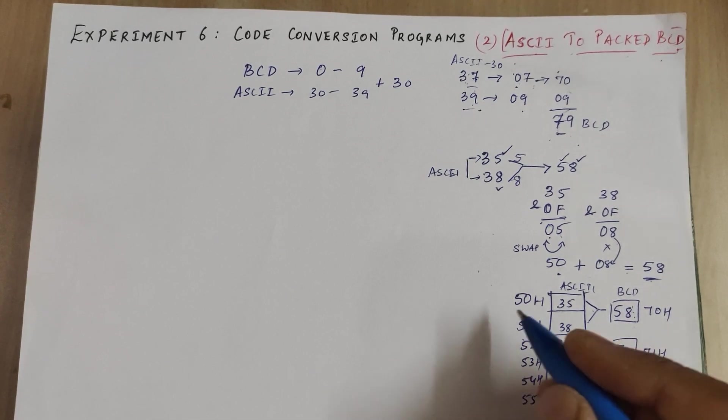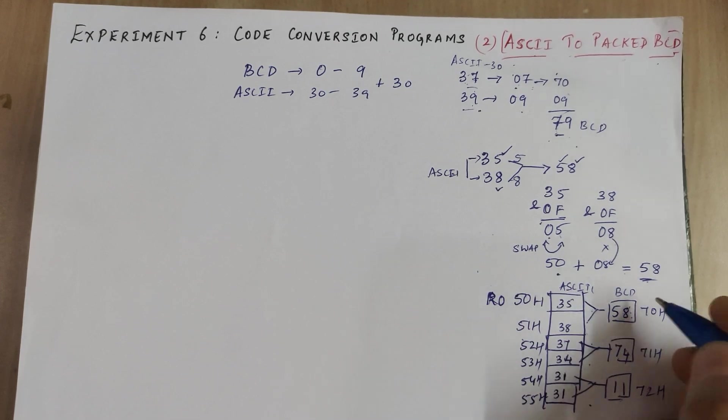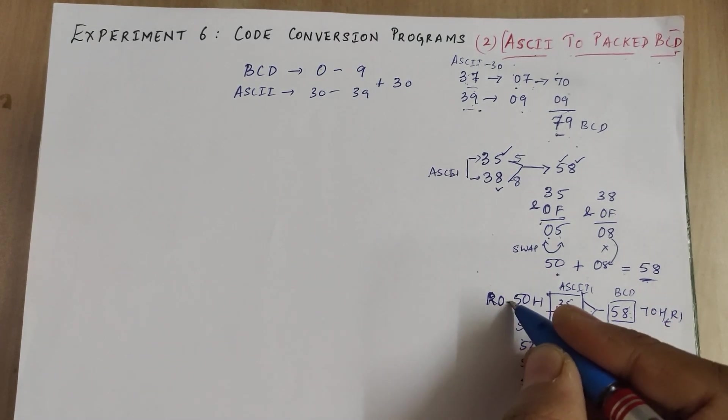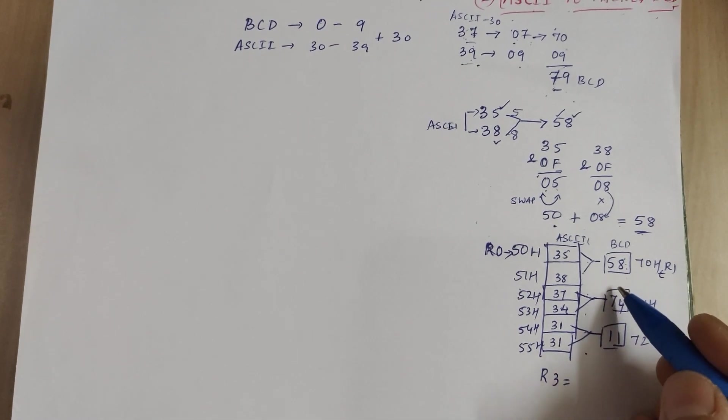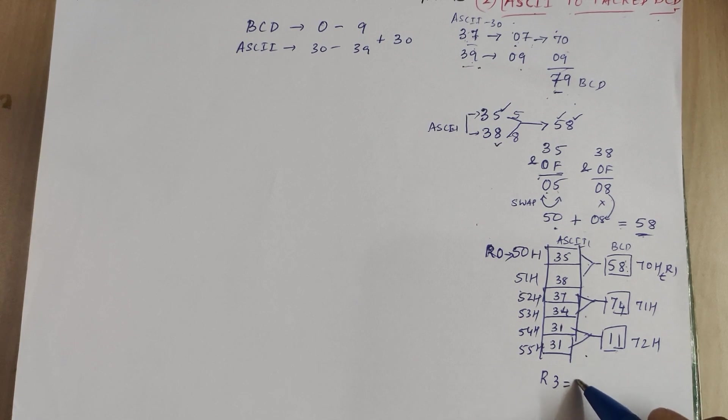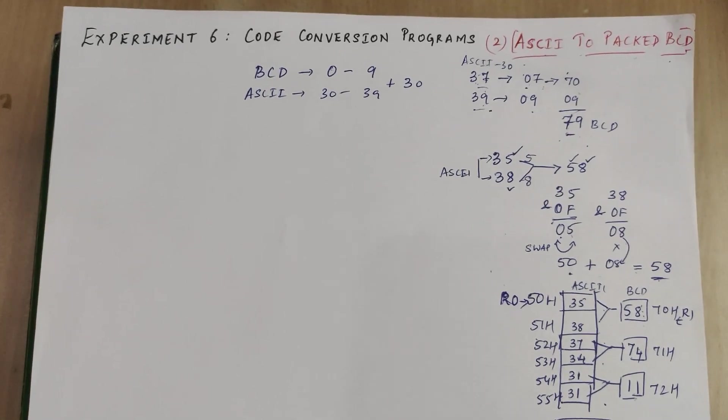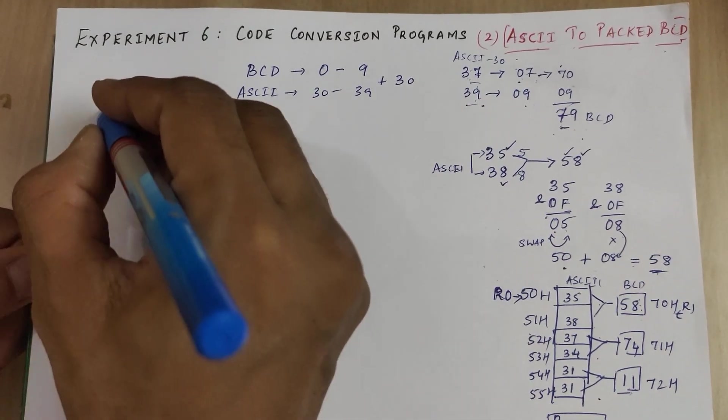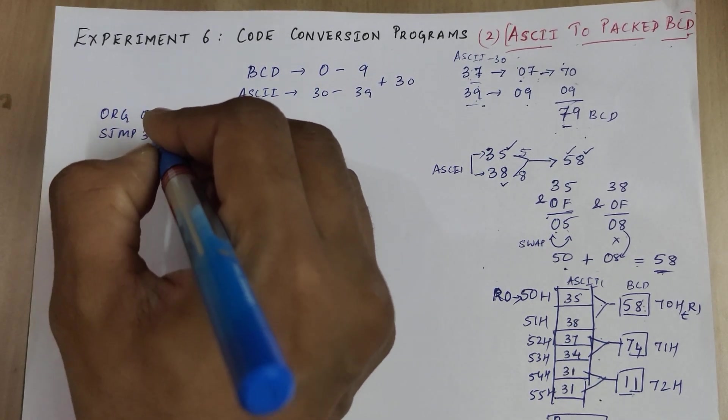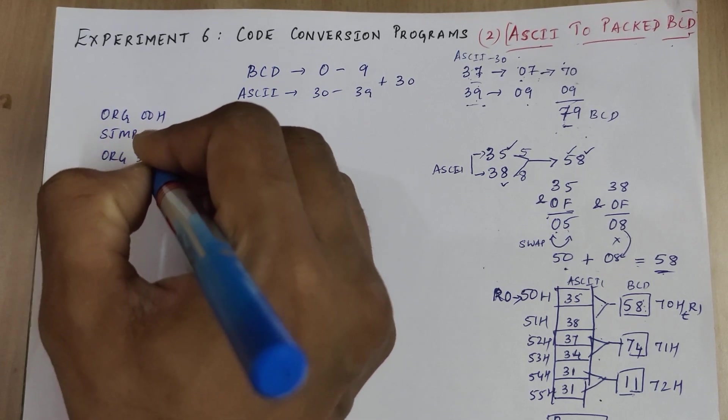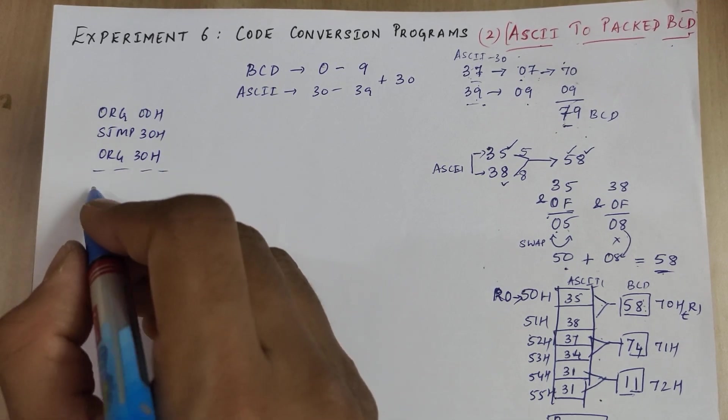These memory locations appear to be internal memory locations. We can use internal memory pointers say R0 and R1 pointing to these locations. We need a counter variable, let's take it as R3 equal to 3 which is acting as the counter. The first three lines would remain the same: ORG 00H, S jump 30H, and ORG 30H to skip the interrupt vector table.